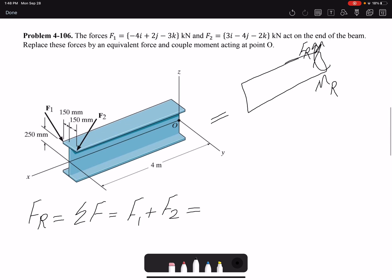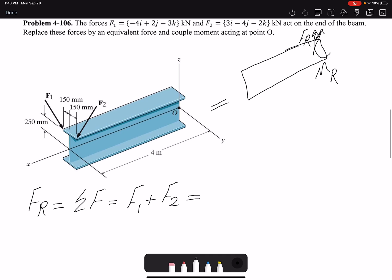Negative 4 plus 3 would be negative 1 and so forth. So the result would be negative 1 I minus 2 J, negative 5 K. Okay, and the unit is kilonewton. So we are done with our resultant force.